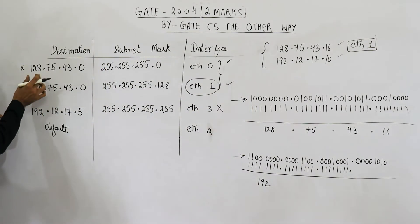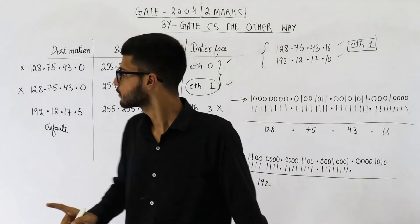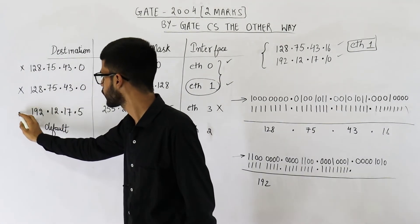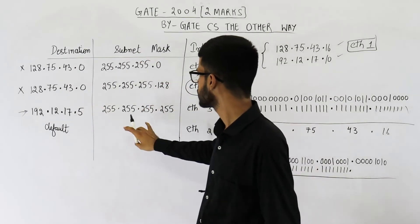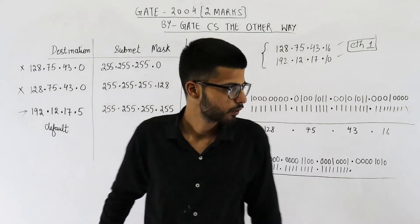That means, there is no chance that result could match with this one because this network ID begins from 128. Here also it begins from 128. So the only possibility of matches for this network. So let us analyze this subnet mask only. It is all ones.